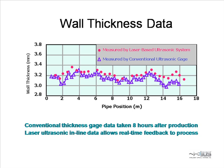Here we have plotted the data as wall thickness versus position along the 16-meter tube. The laser ultrasonic data is plotted in red circles. After the tube cooled, thickness data was taken by hand using a transducer-based thickness gauge, plotted in violet triangles. The data are in good agreement after accounting for an expected offset associated with thermal expansion.